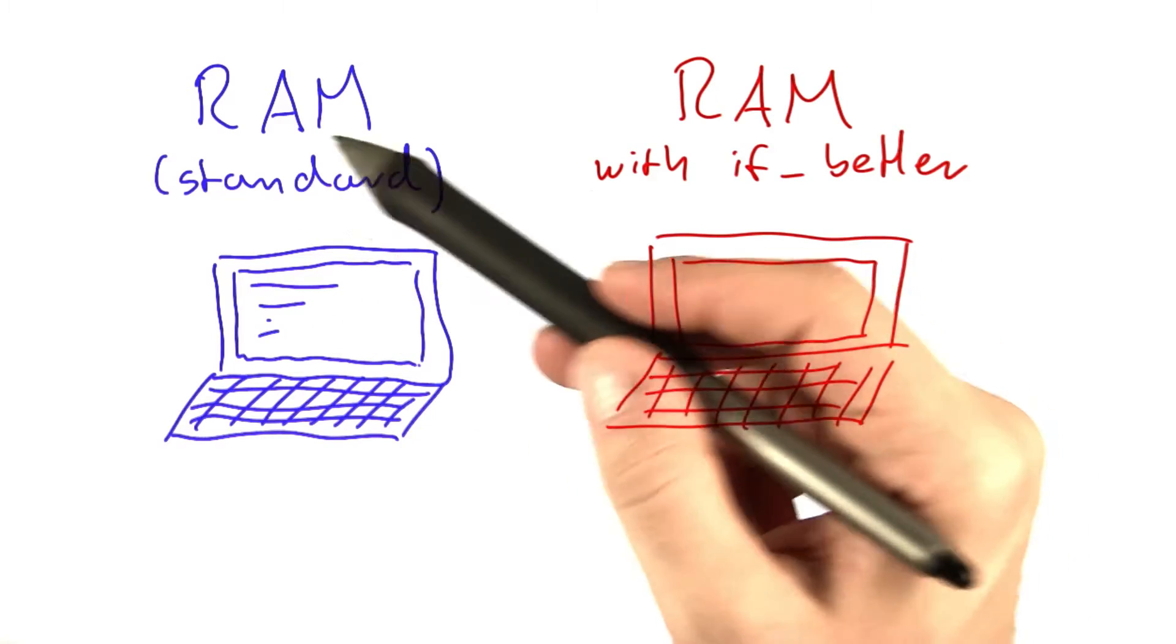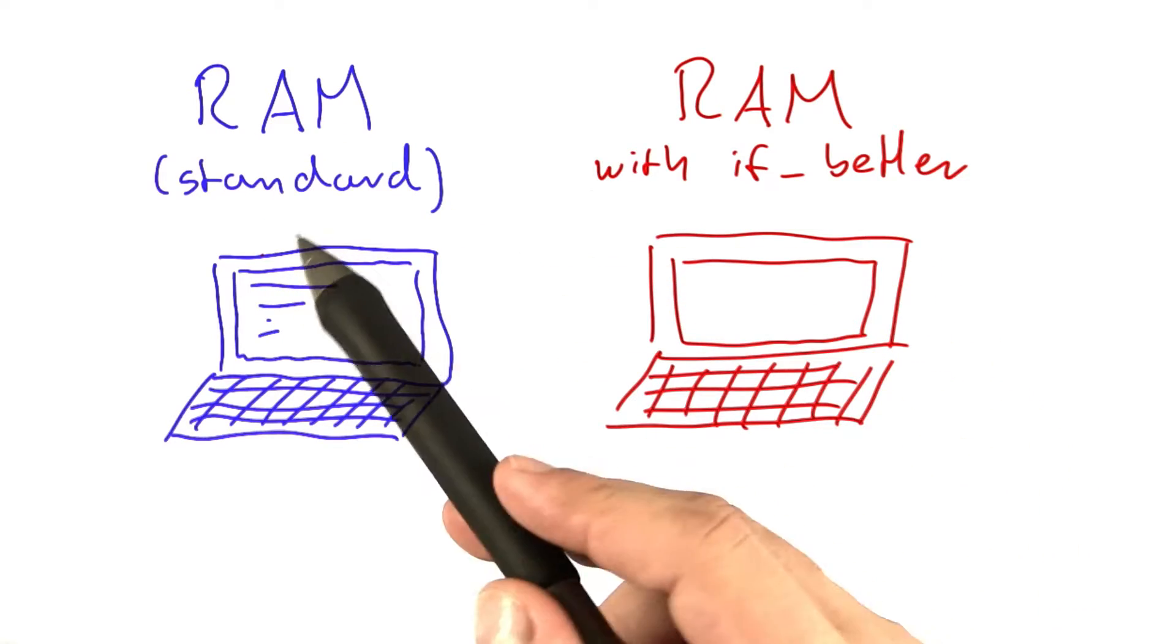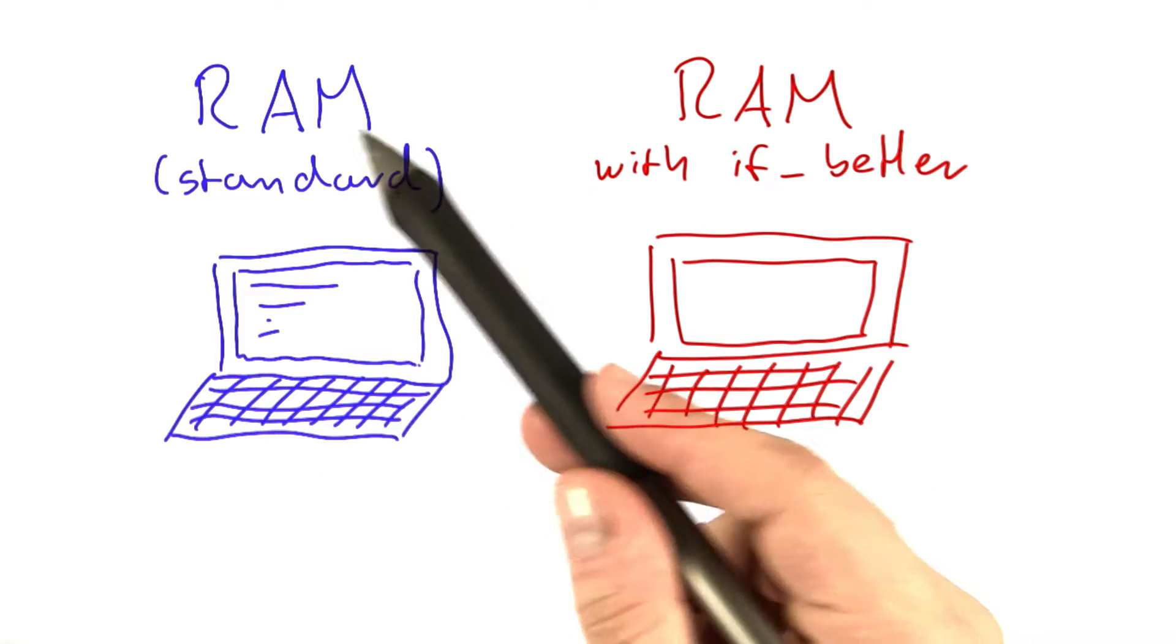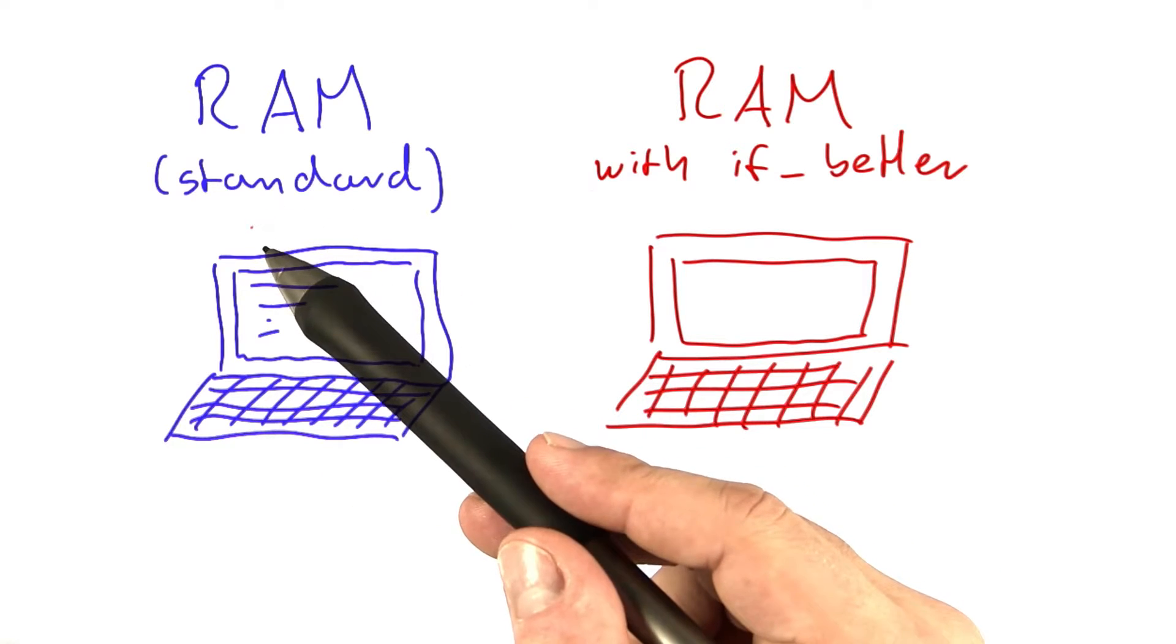So by now we know two types of RAM machine. The first one here on the left is the one that we introduced in the first unit, and it is not allowed to use the if better function.